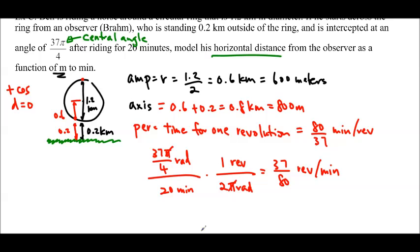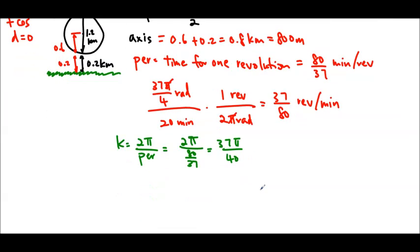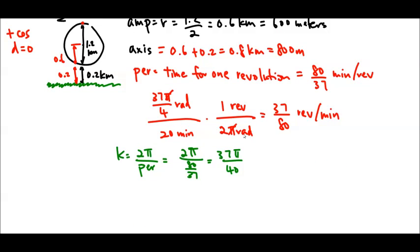So the last thing we need to find is our k. k is equal to 2π over the period. So 2π over 80 over 37, which gives us 37π over 40, which is fine. That's an exact value, so it's better to have exact values. So now we can write our equation. Actually, let's do a little diagram as well. So we'll draw our maximum, our axis, and our minimum.